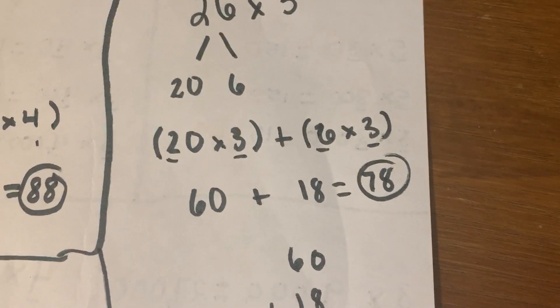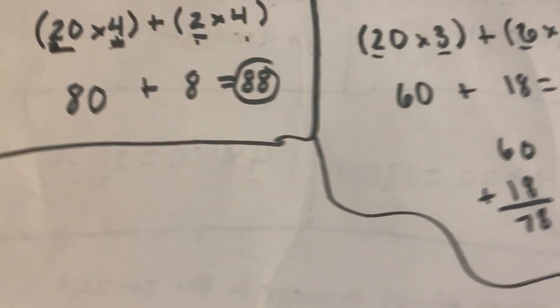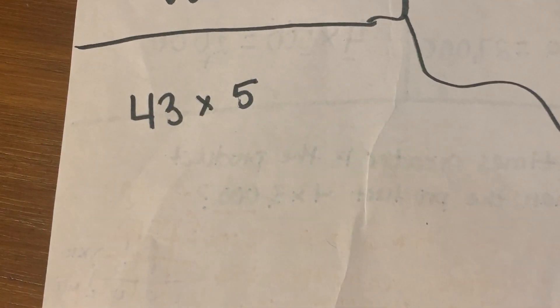It's really not much different than what you were doing before. All right, let's do one more. So let's go ahead and raise the difficulty just a little bit. Let's do 43 times 5. Go ahead and give that one a go.